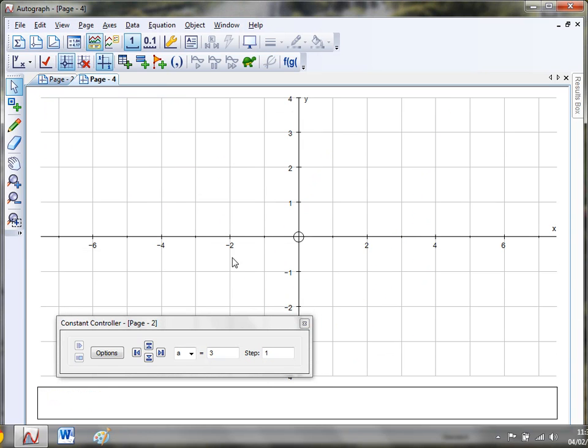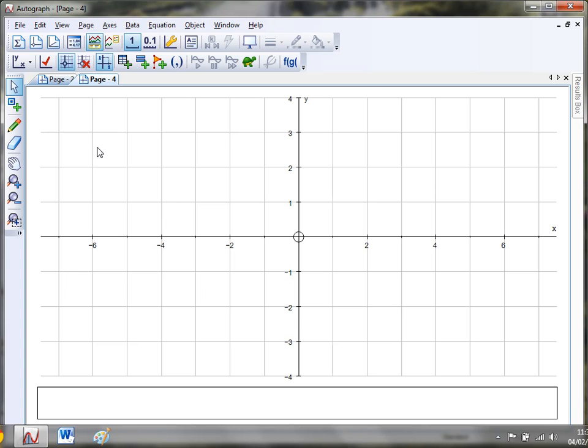If you want to do that on Autograph, here's a nice little trick for you. Just crack open a new 2D graph page or just close that constant controller. What you need to do if you want a little wiggly line on the go is just go to point mode. I'm just going to change my snap settings to 0.1 so I can have a bit of flexibility and just pop on a few points wherever you want. I'm just going to go for four points.